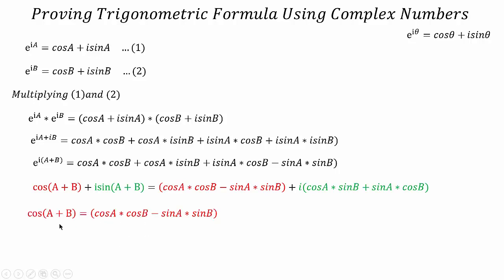So equating the real part we get cos(A+B) = cos(A)cos(B) - sin(A)sin(B), and sin(A+B) = cos(A)sin(B) + sin(A)cos(B).